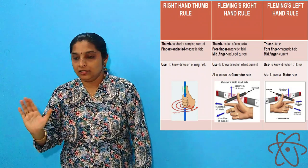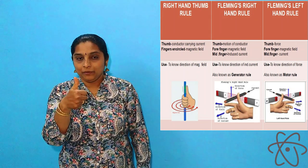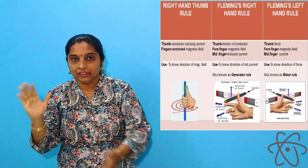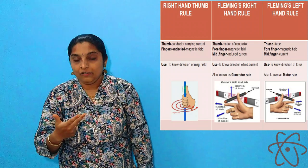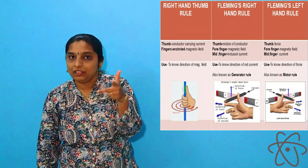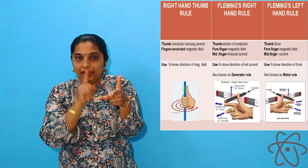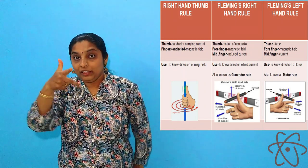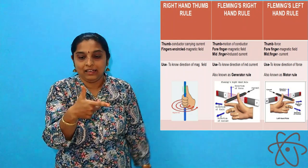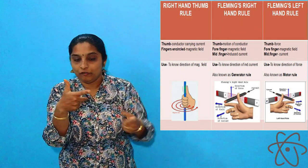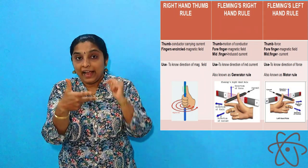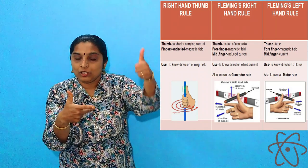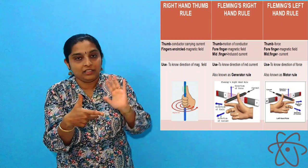The first rule was the right hand grip rule — in this rule there are only two components: the current-carrying conductor and the magnetic field. The second rule was Fleming's left hand rule, which has three components: magnetic field, current, and the force acting on the conductor. And in this video we learned Fleming's right hand rule, which also has three components: magnetic field is on the forefinger — same finger as in the left hand rule. Instead of current it is induced current on the middle finger, and instead of force it is the motion of the conductor on the thumb. That's the only difference.